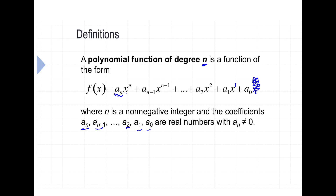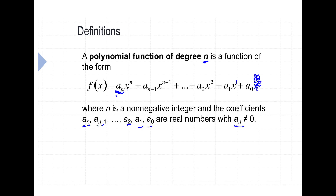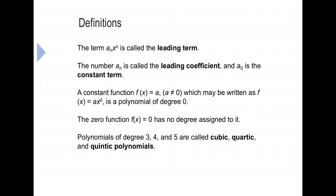Notice that we also say that a sub n cannot equal zero. A sub n is the coefficient of the very first term, and if it were zero, that would eliminate that term and it would no longer be an nth degree polynomial — that term would be eliminated. That's why we have to say that a sub n cannot equal zero.